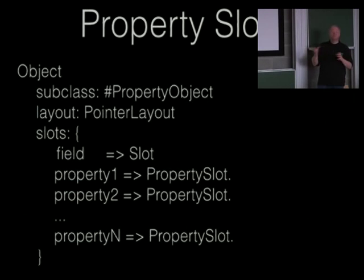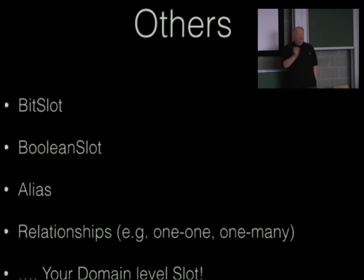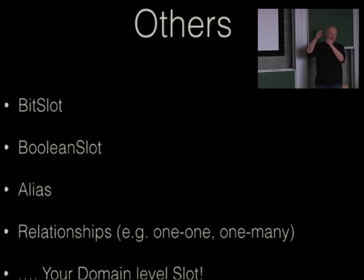And then it has morph extension, which has another 10 instance variables and a property dictionary. Because there's so much state that sometimes is needed, sometimes not. And with this, you can actually model that as part of the language. Instead of adding a morph extension, you can actually add property slots. Or another thing is a Boolean slot. Boolean slot means that you say, okay, in this instance variable, I can only store true and false.